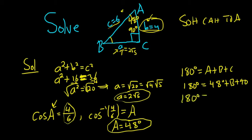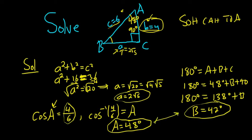So 180, it's going to be 138 plus b. If you subtract 138, you're going to get 42. So b is 42 degrees. And you can check your answer. You can add up a, b, and c. Right, 42 plus 48, that's going to be 90. And then 90 plus 90 is 180. So we've solved the triangle. I hope that made sense.